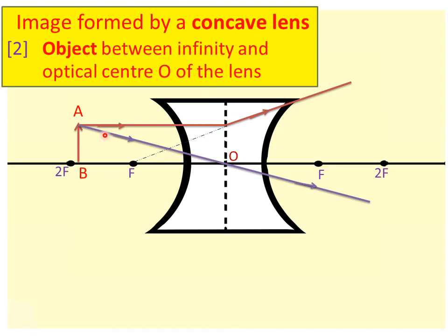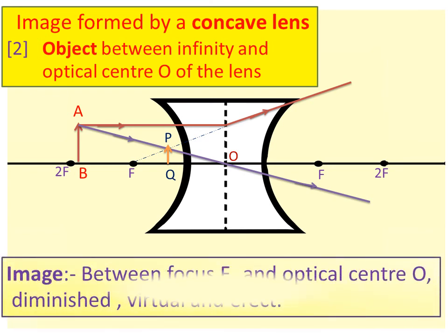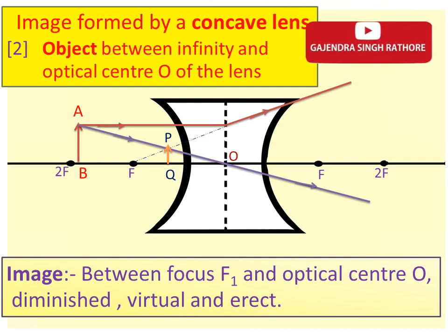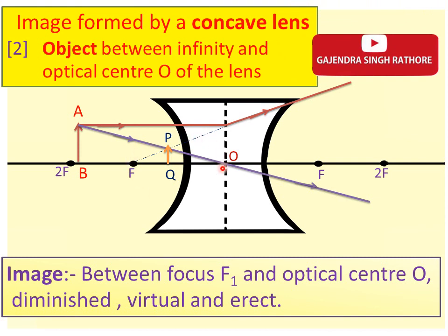This is our second ray — a ray of light passing through the optical center of a lens will emerge without any deviation. So here we are getting our image. AB is the object and PQ is our image. Image is between focus F1 and optical center O — diminished, virtual and erect. Our conclusion is: a concave lens will always give a virtual, erect and diminished image irrespective of the position of the object.